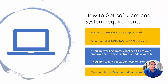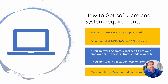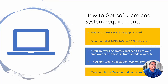How to get the software: the minimum system requirement is 4GB RAM and 2GB graphics card; recommended is 16GB RAM and 4GB graphics card. You can get a 30-day trial, or if you are working with a company you can get a commercial license. If you are a student or have a student friend, you can get a one-year student license from Autodesk — either the AEC Collection or an individual software — and install it on your system.